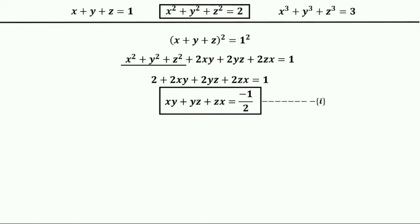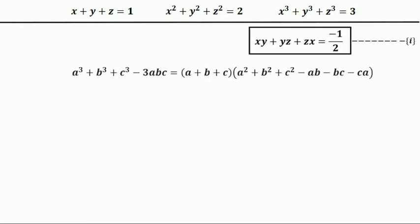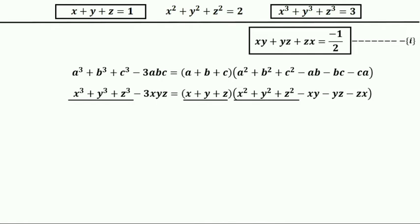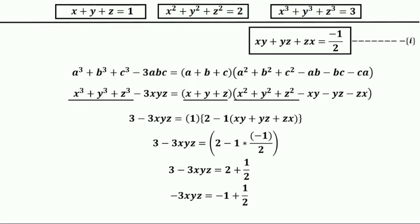Now I am going to use the cube sum identity. Substituting a, b, c by x, y, z we get x³+y³+z³ minus 3xyz equals (x+y+z) times (x²+y²+z² minus xy minus yz minus zx). Now substituting x³+y³+z³ with 3, x+y+z with 1, x²+y²+z² with 2, and xy+yz+zx with negative 1 by 2. After simplification we get xyz equals 1 by 6. Let this be equation two.